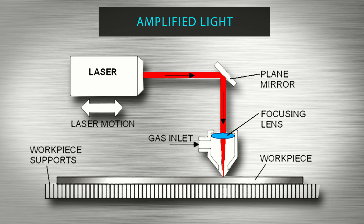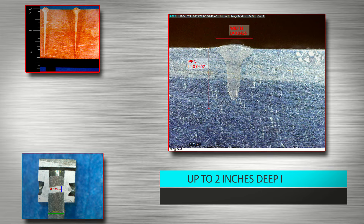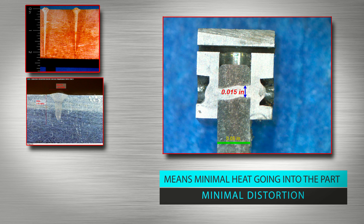The biggest advantage of EB welding is it can deliver deeper penetration welds than any other process. An EB weld can be up to two inches deep in steel with a width of less than 0.2 inches. The narrow width, also called the heat affected zone, means minimal heat going into the part as well as minimal distortion. EB can also apply very light welds, only a few thousandths of an inch deep.